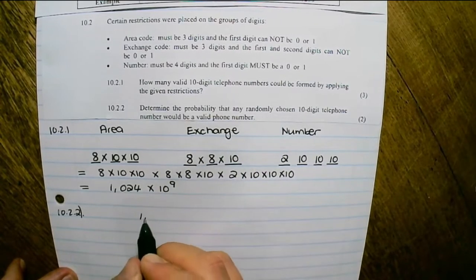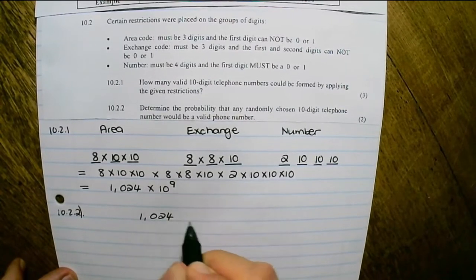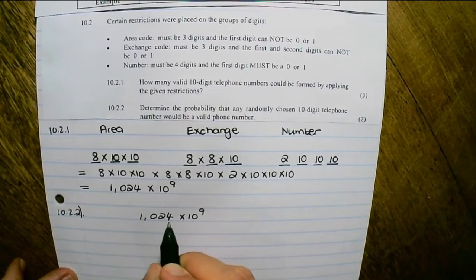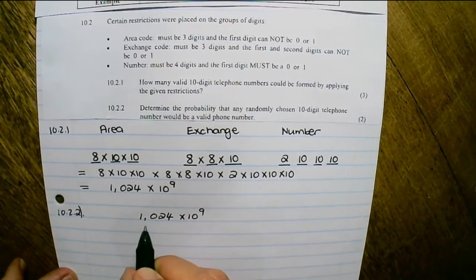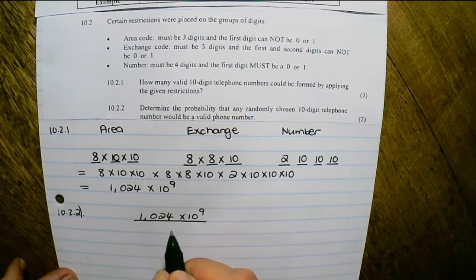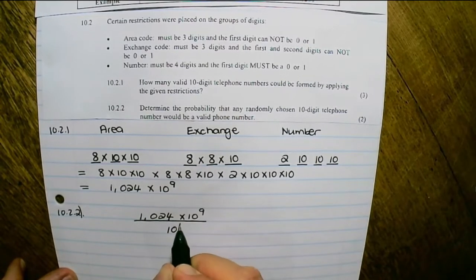We found that the amount of valid numbers is 1.024 × 10 to the power of 9, and the total number of numbers in the first question was 10 to the power of 10.